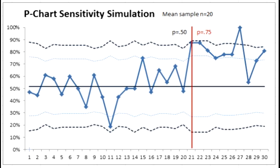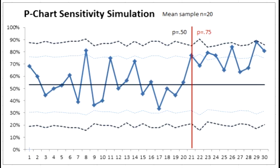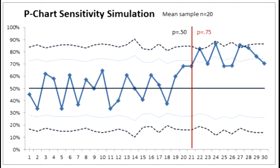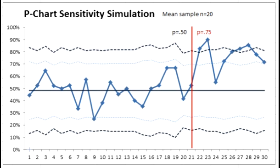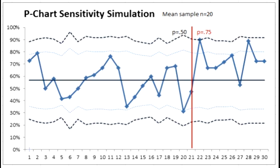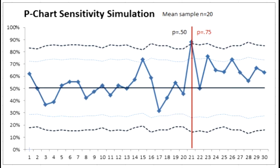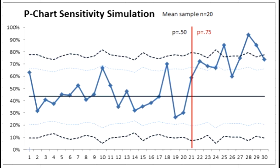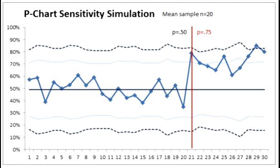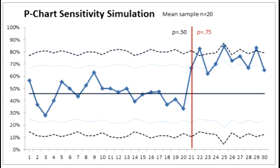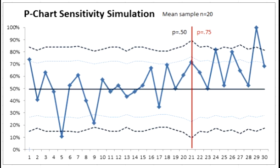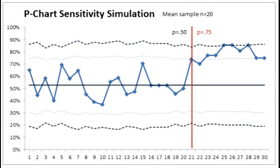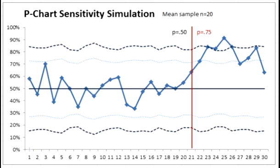That signal is triggered and special causes are detected in the first couple of data points fairly often, but not as reliably as before. Although we do see the shift rule — a succession of eight points on the same side of the center line — being triggered on just about every replication, that seems to fire just about every time.